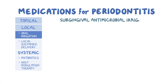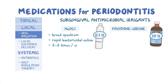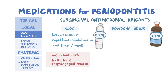Subgingival antimicrobial irrigants include sodium hypochlorite and povidone iodine. Sodium hypochlorite in a 0.1% solution serves as a broad-spectrum oxidizing substance with rapid bactericidal action. It can be applied by the dentist or at home two to three times per week using an irrigation device. The main disadvantages of sodium hypochlorite include unpleasant taste and possible irritation of the oropharyngeal mucosa.